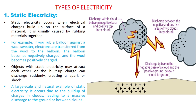How does lightning occur? It occurs due to the build-up of charges in clouds, which leads to a massive discharge of charges to the ground or between clouds themselves.